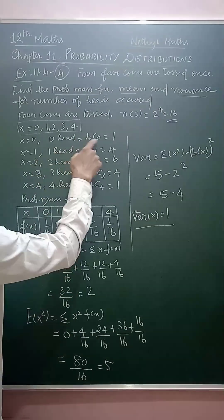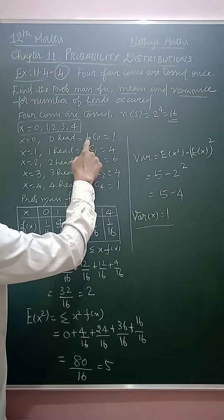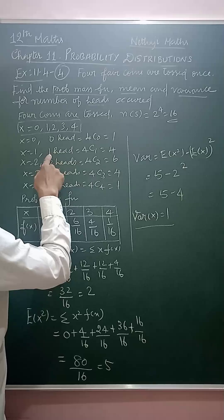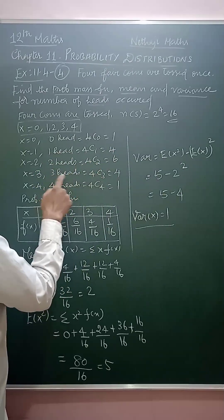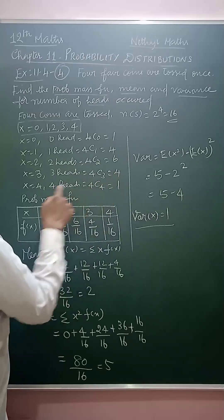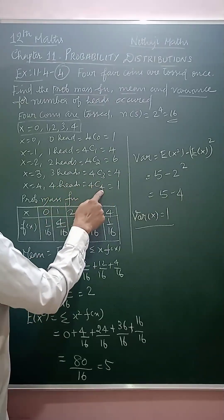So, if you have 4 coins, the value is 1. 1 head means 4C1, 4. 2 heads means 4C2, the value is 6. 3 heads means 4C3, again 4. 4 heads means 4C4, value is 1.